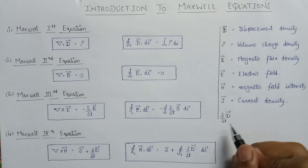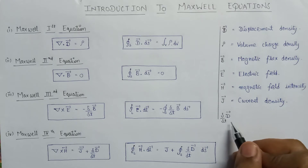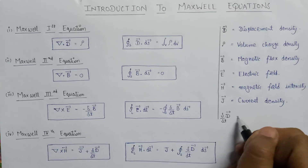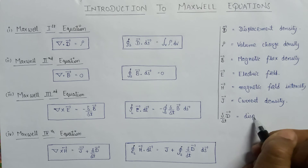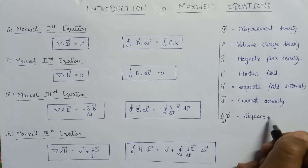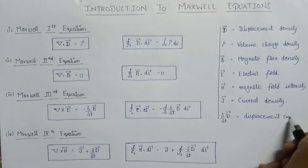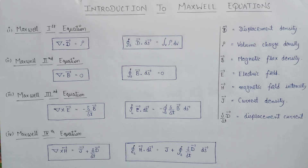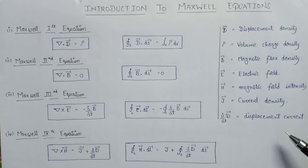Now dD/dt shows the displacement current. These are all the parameters that we are going to use in Maxwell's equations.